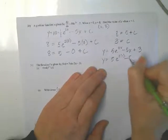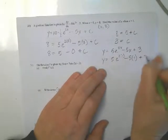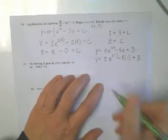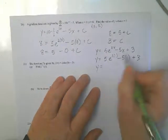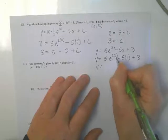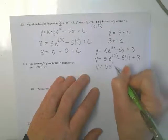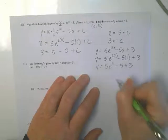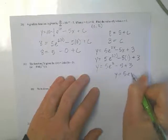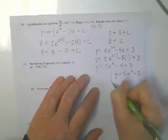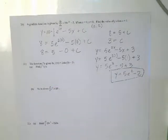So I had to find the original function first, and now I need to substitute x equals 1. y equals 5 e to the 2 times 1, which is 2. So that's 5 e squared. Minus 5 times 1 plus 3. So y equals 5 e squared minus 2. Number 20.